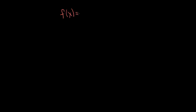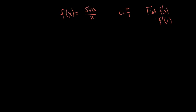The question was about finding the derivative of f of x equals sine x over x, and then evaluating that at the value c equals pi over 4. So essentially, we want to find f prime of x, and then find f prime of c when c equals pi over 4. This is a quotient of two functions, so we're going to need to use the quotient rule.